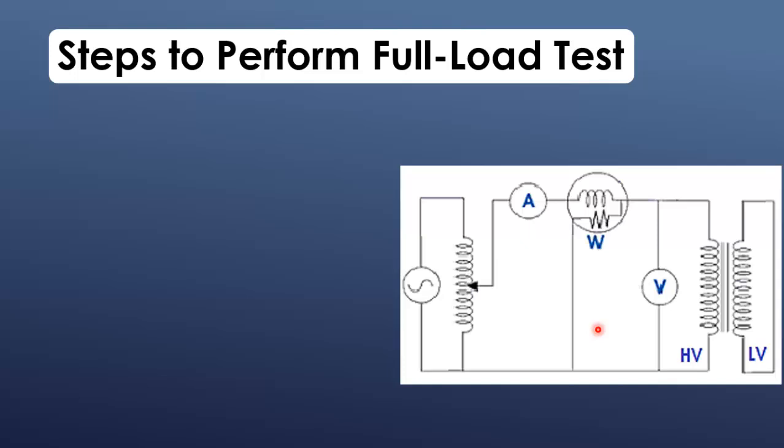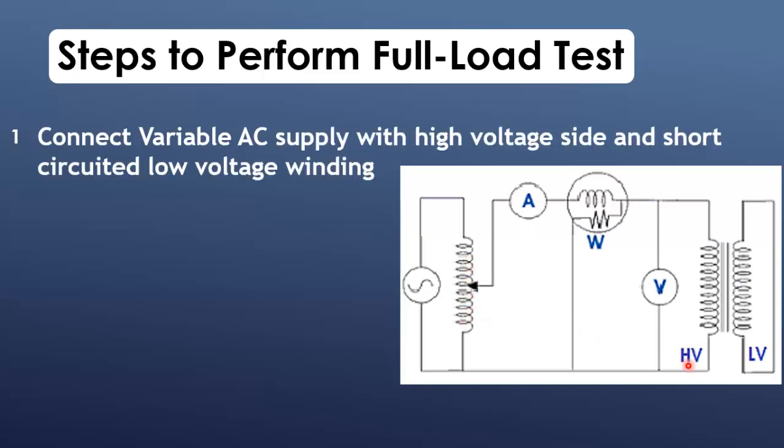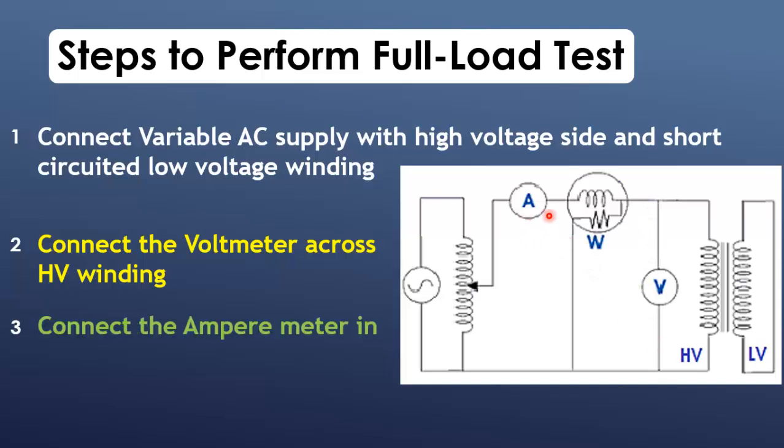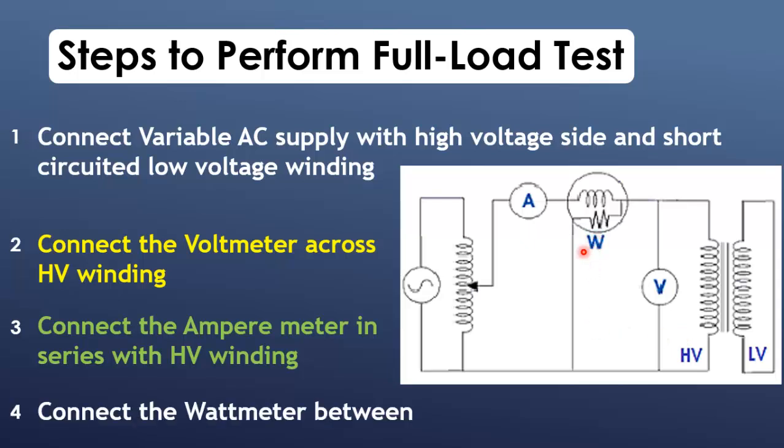Let's see what are the steps to perform transformer short-circuit test. Remember, connect variable AC supply with high-voltage side or secondary winding, and short-circuited low-voltage or primary winding. Now connect the voltmeter across high-voltage winding. Now connect the ammeter in series with high-voltage winding. Connect the wattmeter between AC source and high-voltage winding.